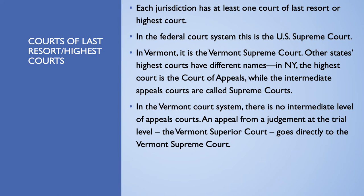Each jurisdiction has at least one court of last resort, or a highest court. In the federal court system, this is the U.S. Supreme Court, which has nine justices appointed by the president with the advice and consent of the U.S. Senate. In Vermont, it is also called the Vermont Supreme Court. Other states' highest courts have different names — in New York, quite confusingly, their highest court is called the Court of Appeals, while the intermediate appeals courts are called Supreme Courts. In Massachusetts, that highest court is the Supreme Judicial Court, or SJC. In the Vermont court system, there is no intermediate level of appeals court; an appeal from any Vermont Superior Court goes directly to the Vermont Supreme Court.